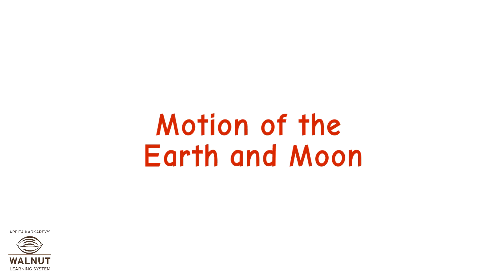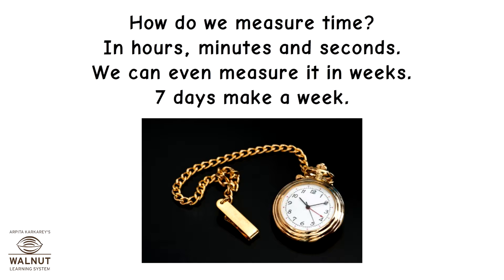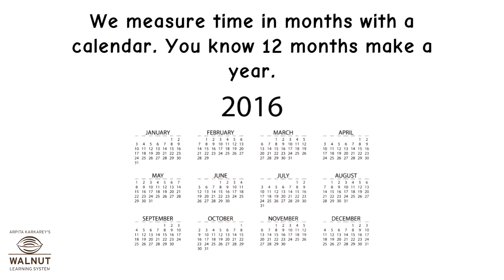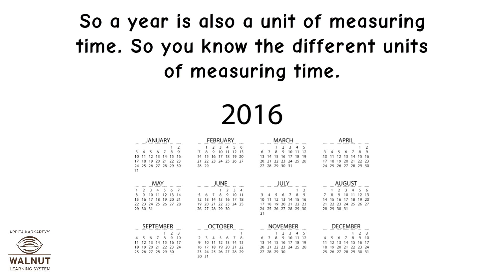Motion of the Earth and Moon. How do we measure time? In hours, minutes and seconds. We can even measure it in weeks — seven days make a week. We measure time in months with a calendar. 12 months make a year. So, a year is also a unit of measuring time. You know the different units of measuring time.